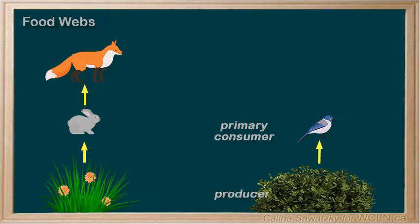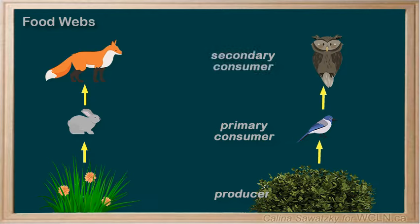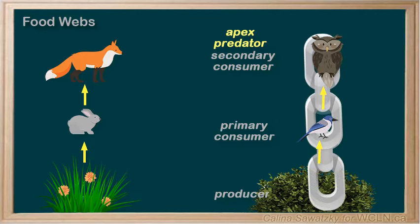In the same way, owls eat smaller birds. Owls get their energy from smaller animals, like small birds. In this case, the owl is the secondary consumer. Because owls aren't usually hunted by any natural predators, we call the owl the apex predator in this food chain. Again, we can think of each animal as a link in a chain — thus, the name food chain makes total sense.